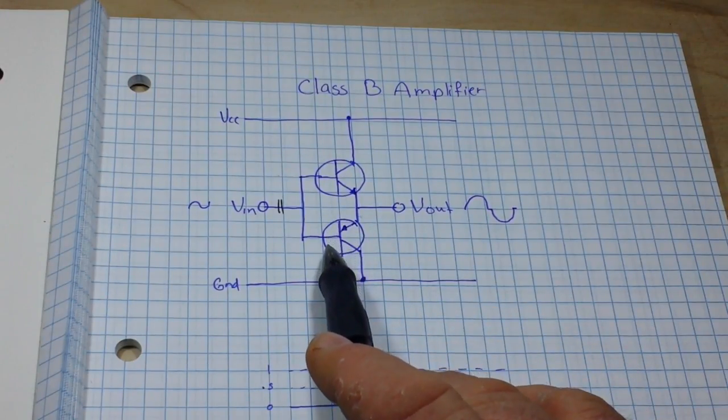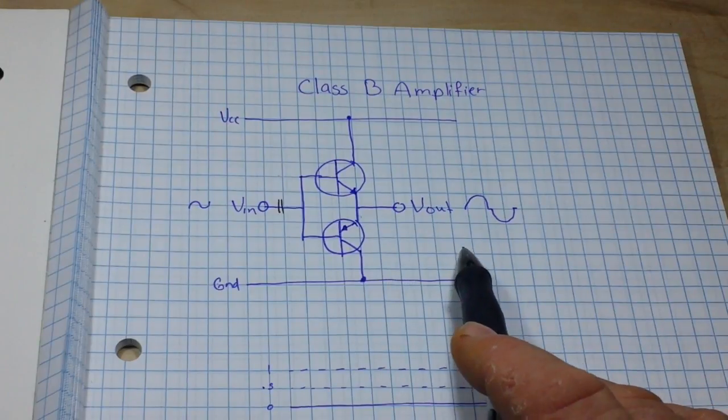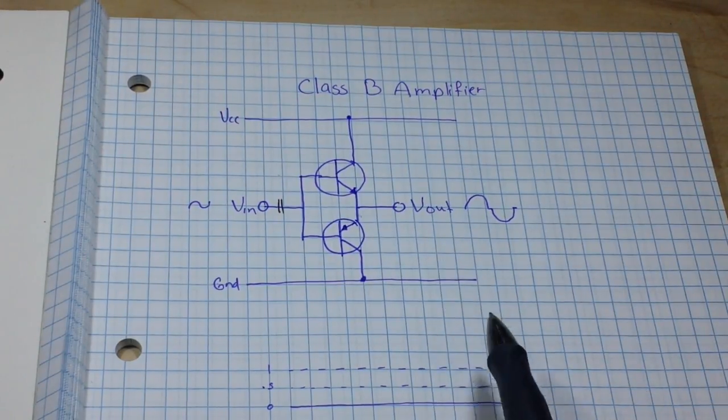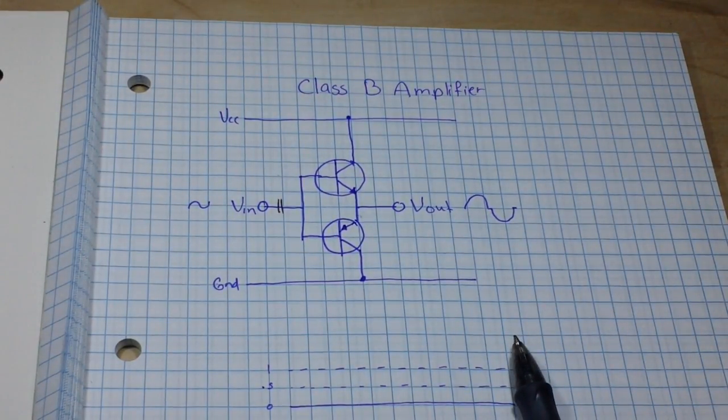What happens is during the positive part of the sine wave, the NPN transistor conducts, and during the negative part of the sine wave, the PNP transistor conducts, which makes this incredibly more efficient. But there is a little bit of a catch.